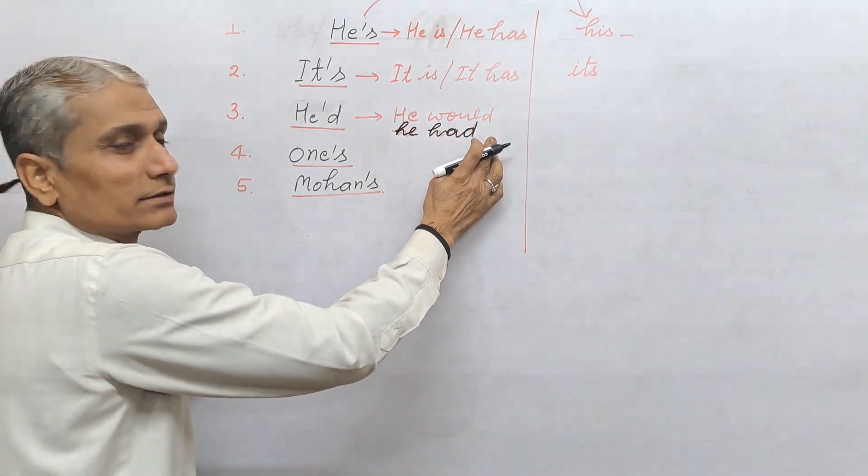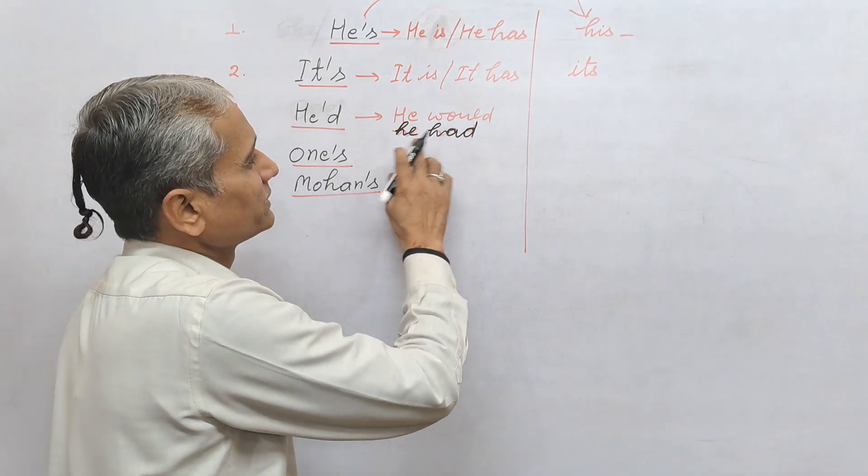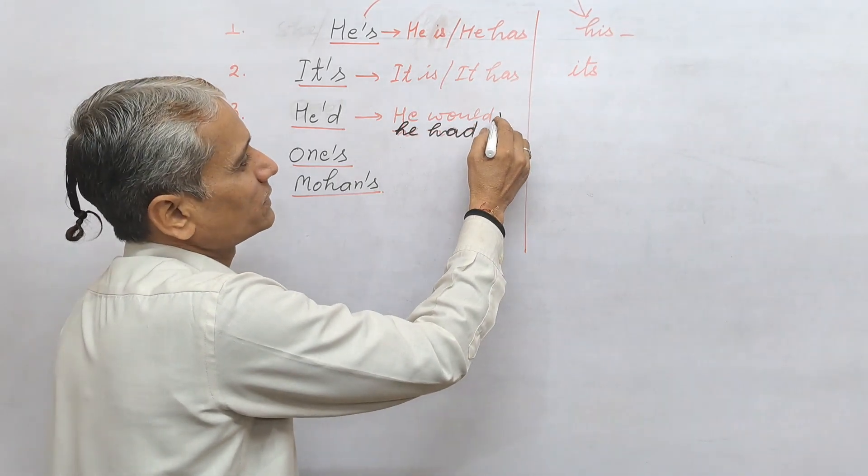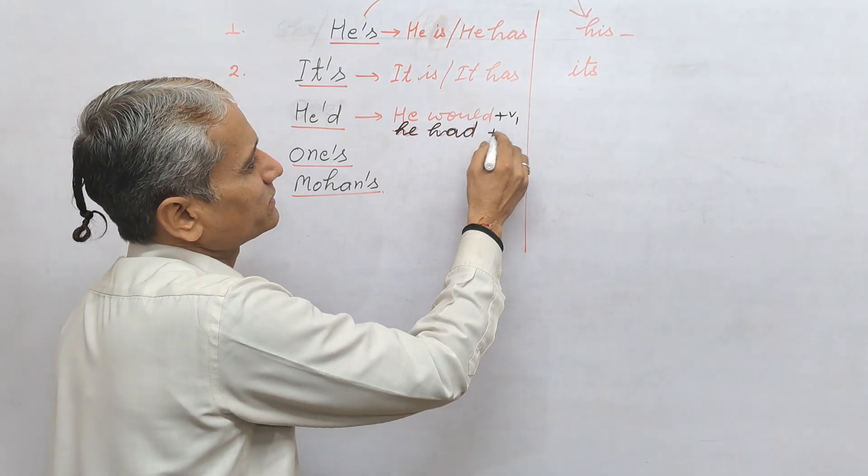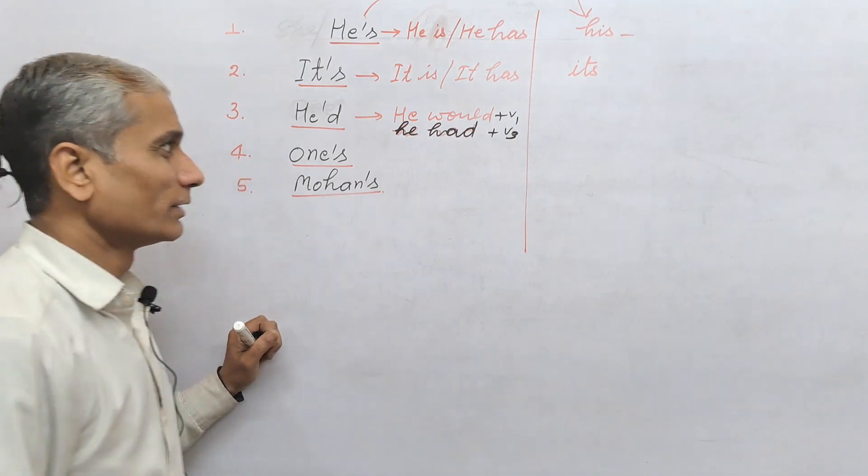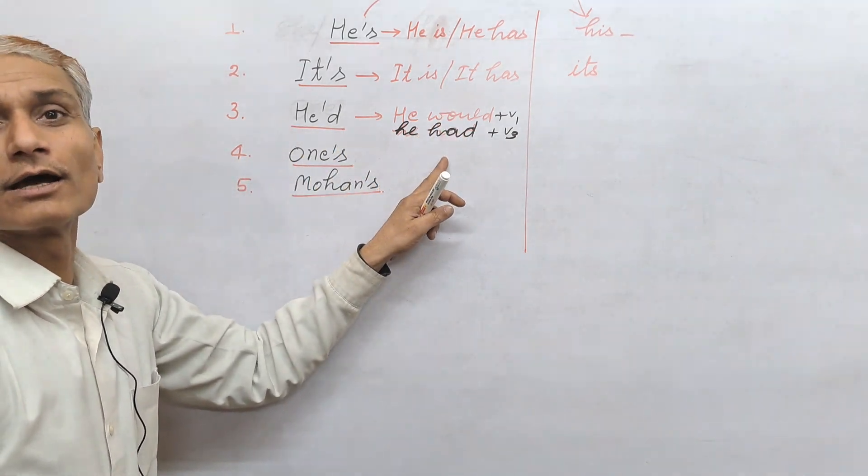If the third form is there, if the third form of the verb is there, that means he had. If the first form is there, that means he would. Because would takes V1 and had takes V3. So according to the verb followed by he'd, we will consider would or had accordingly.